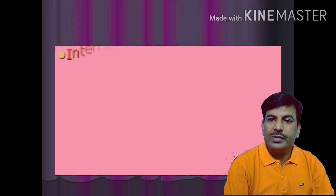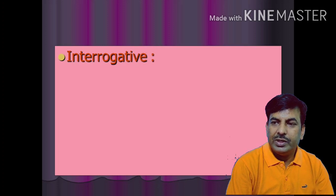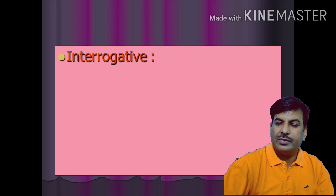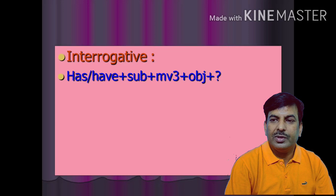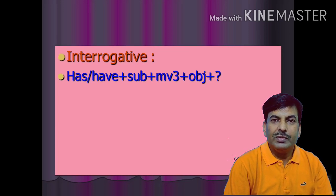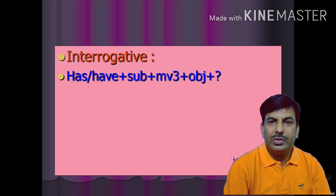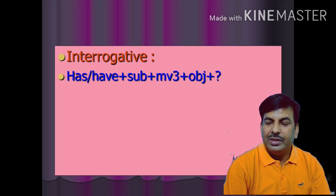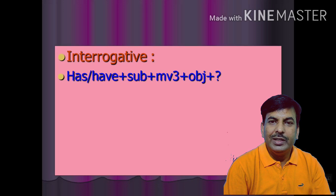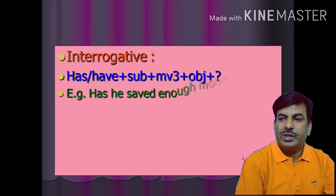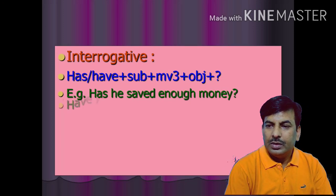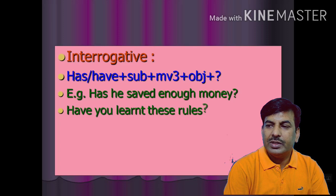Dear students, let us have the rules of interrogative sentences. There are two types of interrogative rules: the first begins with a helping verb, and the other is the question word form. For the helping-verb type, has or have comes first according to the number of the subject, then the subject, then the third form of the main verb, then the object, and finally a question mark. For example: 'Has he saved enough money?' and 'Have you learnt these rules?'